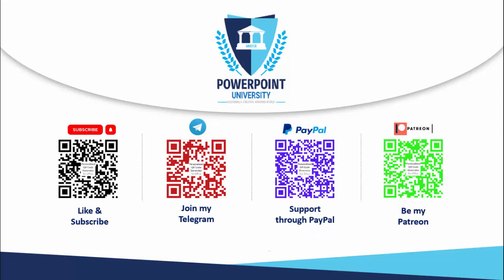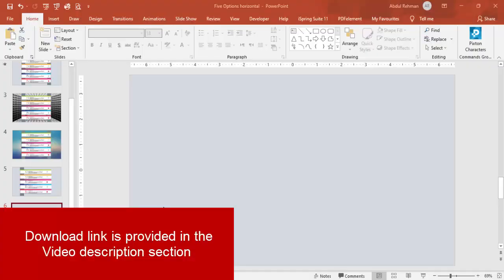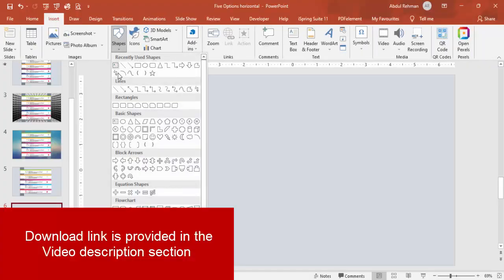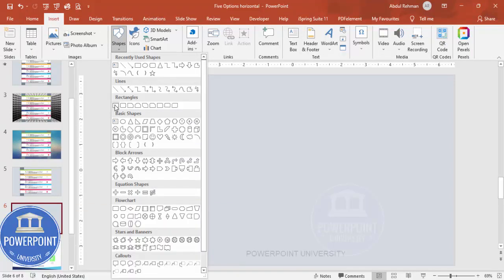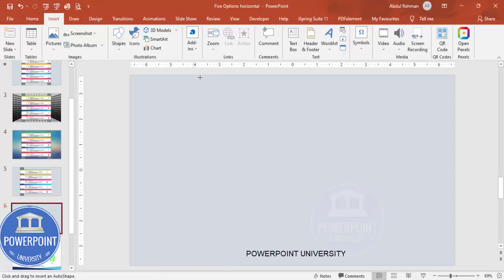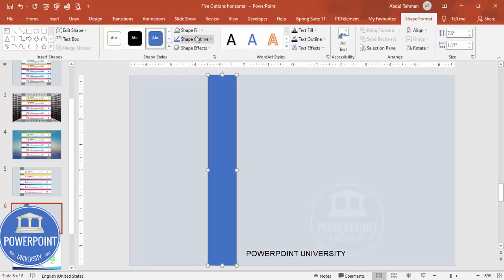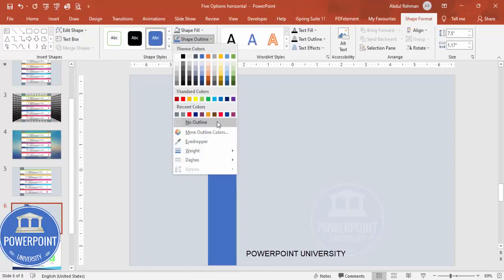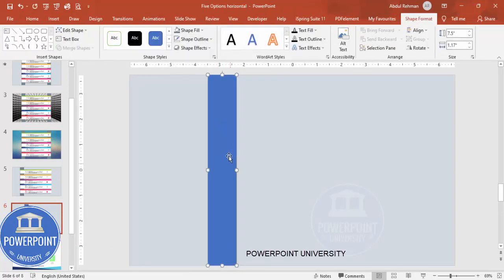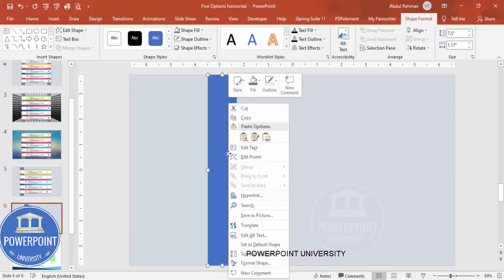Let's start the tutorial. Add a new slide, go to Insert > Shapes, and from the rectangles choose the Rectangle tool. Draw the rectangle, then set the shape outline to no outline.